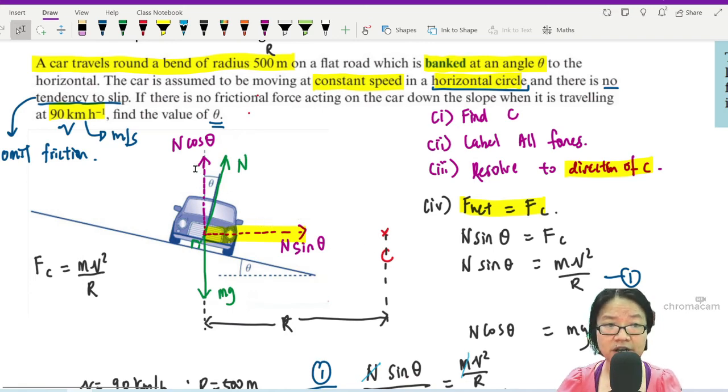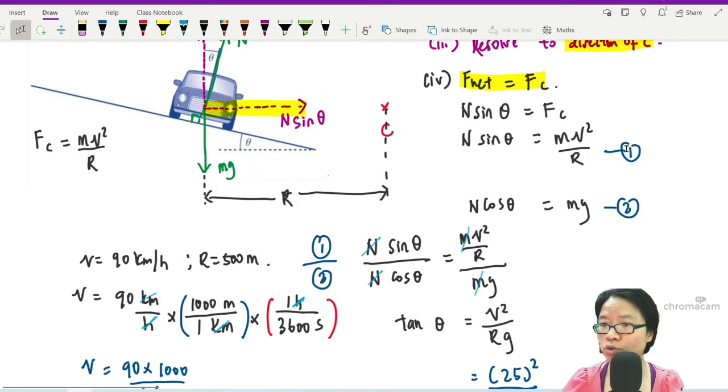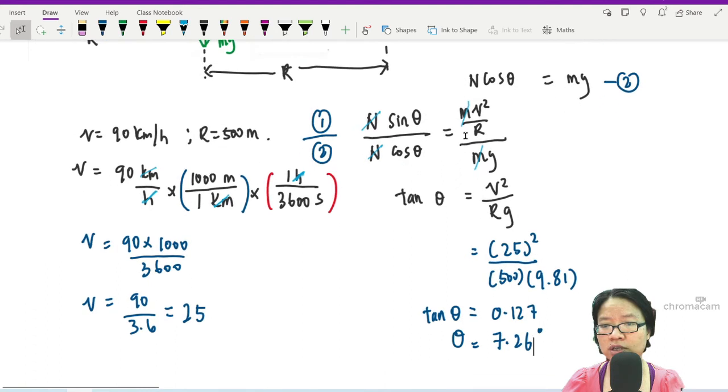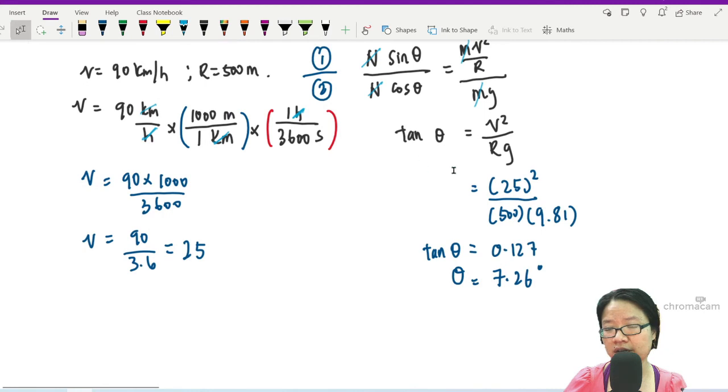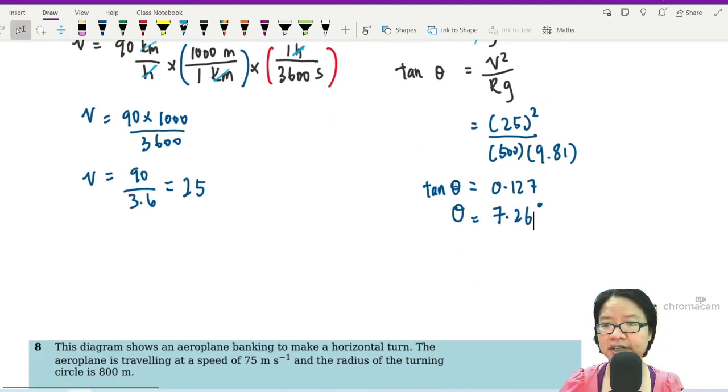Resolve the forces in the direction where one force will be directed towards C to provide centripetal force: N sin θ equals Fc. The second thing we're doing is mg needs to be balanced with N cos θ, so up force equals down force. That's how we arrive at equation one and equation two. Then we simplified by dividing them and we get tan θ equals v² over rg.